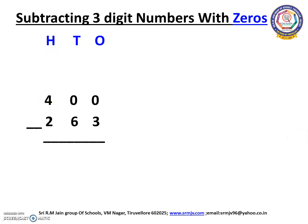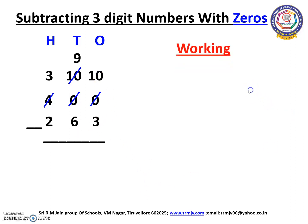We can get 1 from the 100's place. Now this 4 will change into 3 and the 10's place 0 will change into 10. Now we are going to get 1 from the 10's place. The number 10 will change into 9 and the 1's place 0 will change into 10. Now we can subtract 3 from 10.